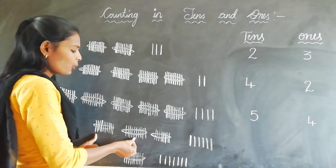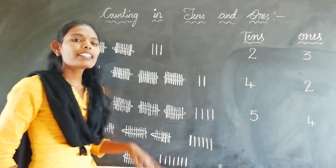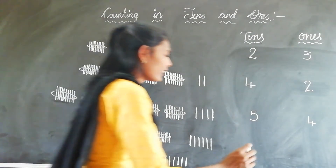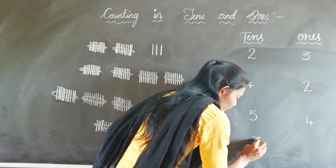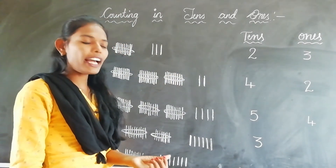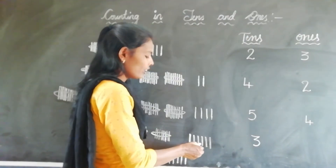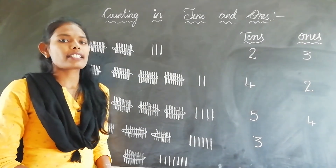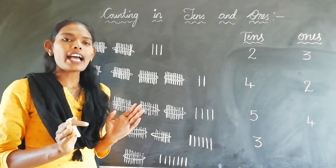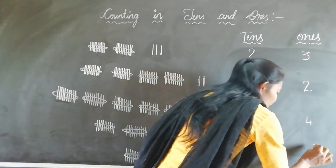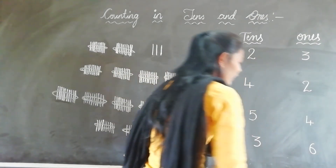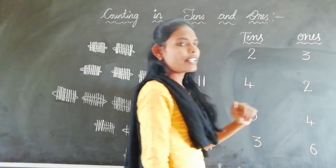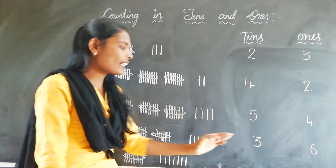Here we have 3 bundles of 10 sticks, so here we have 3 tens. And how many loose sticks do we have? 6 loose sticks, so we have 6 ones. So 3 tens and 6 ones. So the number is 36.